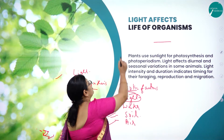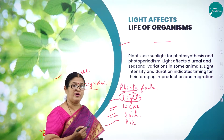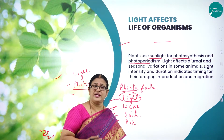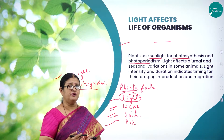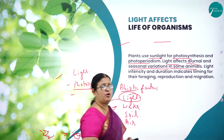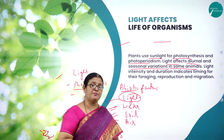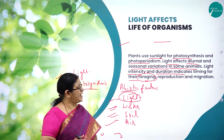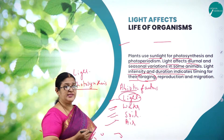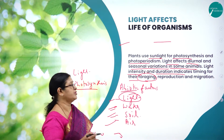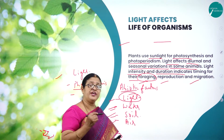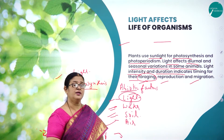Moving on to the importance of light: plants use sunlight for photosynthesis and for photoperiodism. The duration of light is very important for the flowering of plants. Light affects diurnal and seasonal variations in some animals — there are diurnal animals and nocturnal animals. Light intensity and duration indicate timing for foraging, escaping from predators, reproduction, and migration. Light is therefore a very important abiotic factor for living organisms.